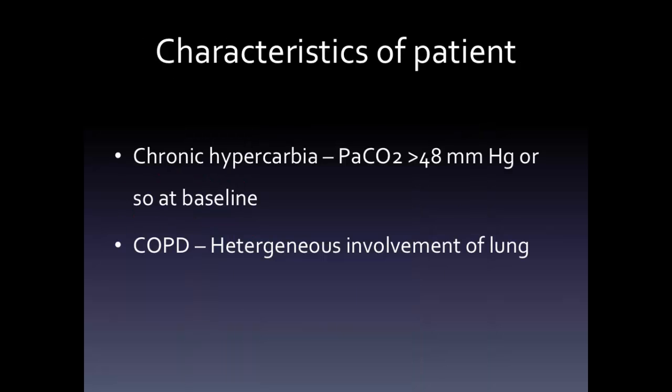There are two characteristics that make this patient vulnerable to hypercarbia when oxygen is delivered. First, our patient with COPD had chronic hypercarbia, putting him at risk for further hypoventilation. Second, the patient's underlying chronic lung disease is a heterogeneous process — in COPD, there are areas of normal lung and areas of hypoventilated lung. Contrast this to neuromuscular disease, where global hypoventilation occurs and the VQ mismatching concept may not be applicable.